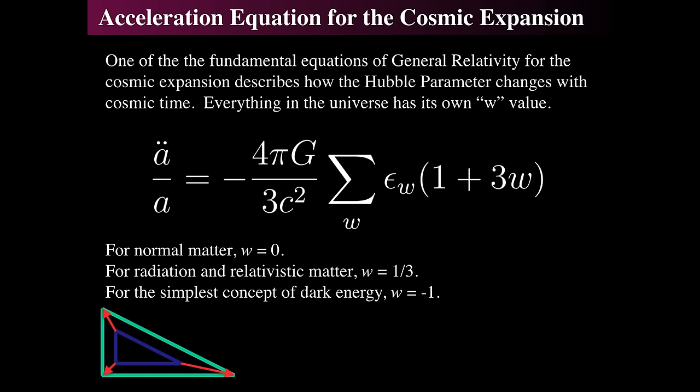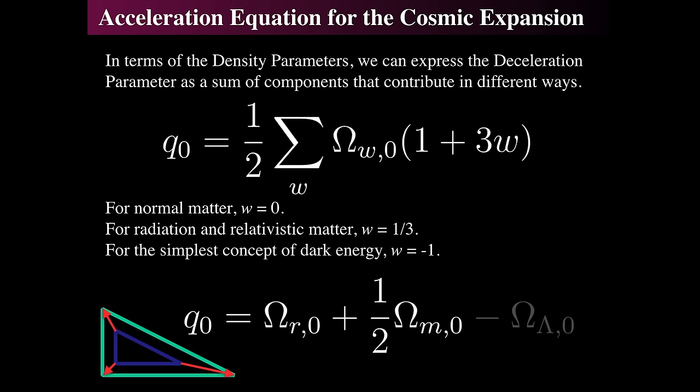The acceleration equation can be re-expressed in terms of the deceleration parameter q₀ using the density parameters Ω (omegas) — how each component compares to the critical density. The sum of all the Ω_w times (1 + 3w)/2 gives you the deceleration parameter. For normal matter, w is zero. For radiation, it's one-third. For dark energy or the cosmological constant, it's minus one.